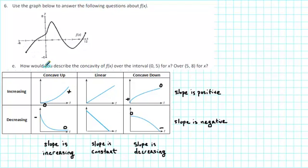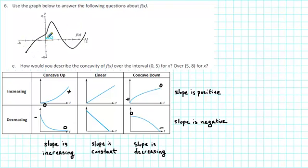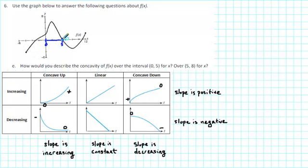Alright, so let's go back to our question. How would you describe the concavity of f of x over the interval from 0 to 5? We want to locate that interval on the x-axis. We start at 0 and go to 5. Notice that 12 divided by 6 tick marks equals 2, so each tick mark is 2 units: 0, 2, 4 — and then here's 5. So we're looking at the interval from 0 to 5 and want to observe the concavity.